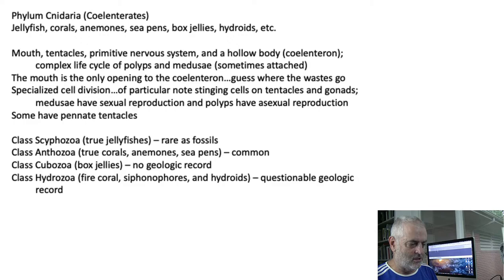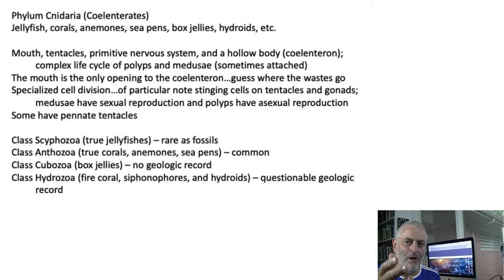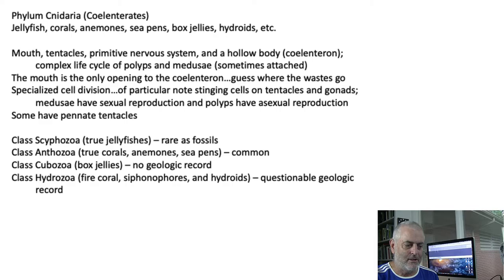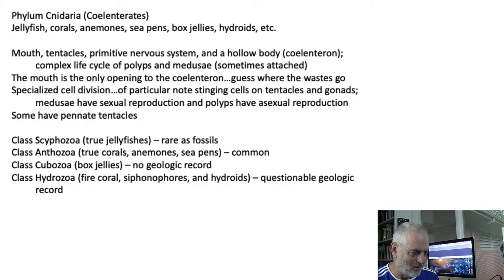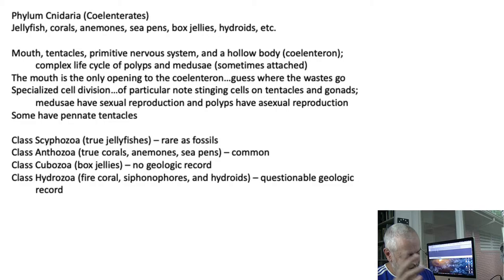If they have stingers on the tentacles below a jellyfish, they can actually kill fish and bring the fish up to the mouth, which can ingest it into the coelenteron. This specialized development of stinging cells on the tentacles is remarkable. They can also reproduce sexually — they do have some sex organs — but they also have a complex life system where they can reproduce asexually as well, what they call budding. Medusoids can have sexual reproduction — medusoids being the jellyfish themselves.